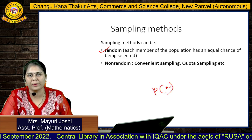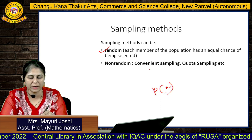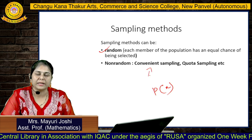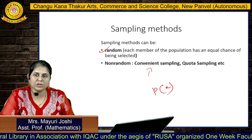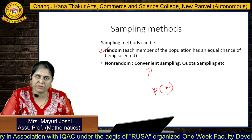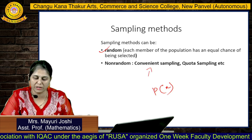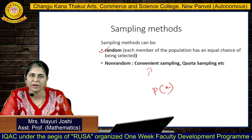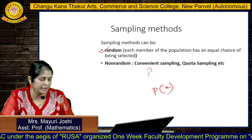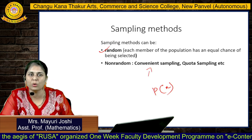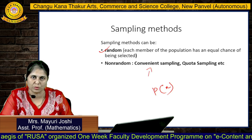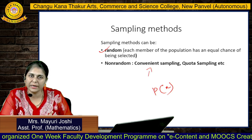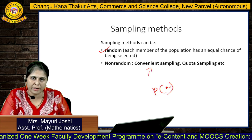Non-random sampling means we are collecting the sample as per convenience — just go and collect 100 observations without any specified information regarding probability. This is what convenient sampling is. The same happens with quota sampling also. If your sample is not associated with probability, it is called non-random sampling.